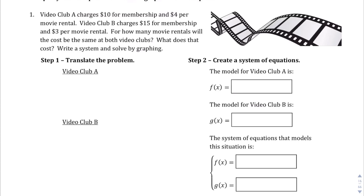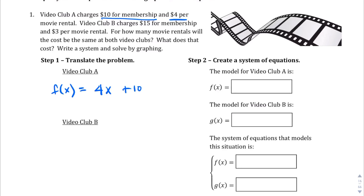Using function notation, f(x) for Video Club A: the membership is a one-time fee of $10 and the variable cost is $4 per movie rental x, so f(x) = 4x + 10. As x — the number of movies — increases, so does the total cost.